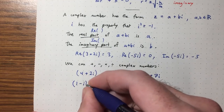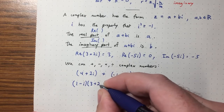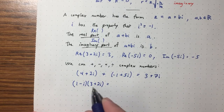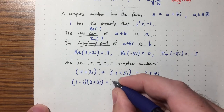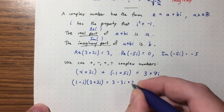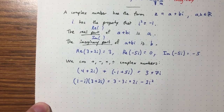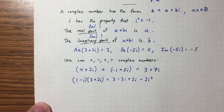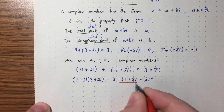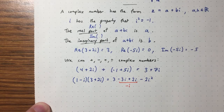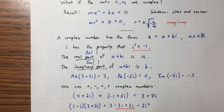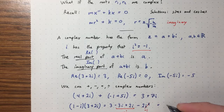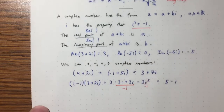Multiplication works similarly. For example, multiplying (1 − i)(3 + 2i): expand to get 3 + 2i − 3i − 2i². Since i² = −1, the term −2i² becomes +2. Combining: the real part is 3 + 2 = 5 and the imaginary part is 2i − 3i = −i. So the result is 5 − i.